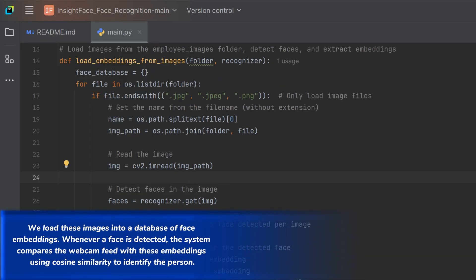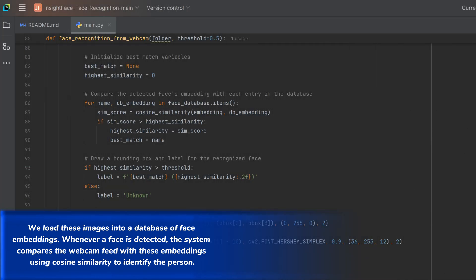We load these images into a database of face embeddings. Whenever a face is detected, the system compares the webcam feed with these embeddings, using cosine similarity to identify the person.